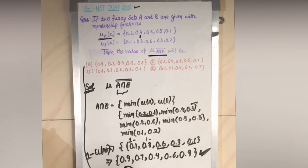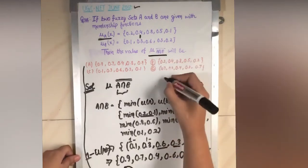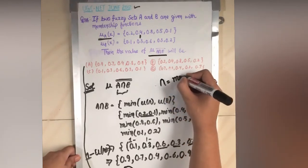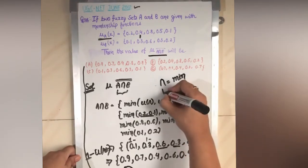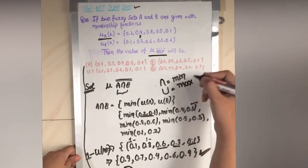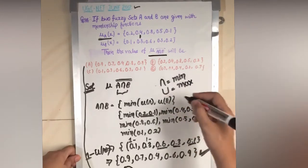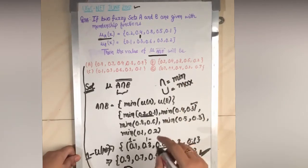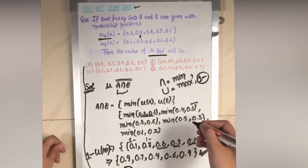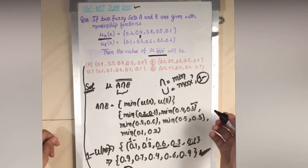This question is super easy and worth two marks. Always remember: for intersection, find the minimum membership element; for union, find the maximum membership of the fuzzy sets; and for complementation, it is always 1 minus the degree of membership of that set. Thank you!